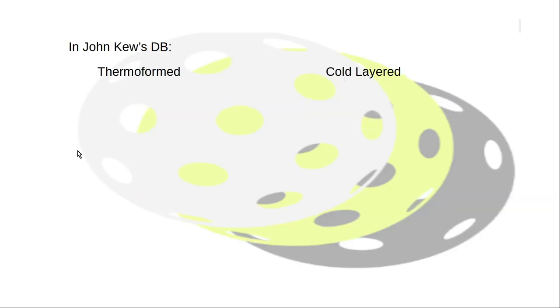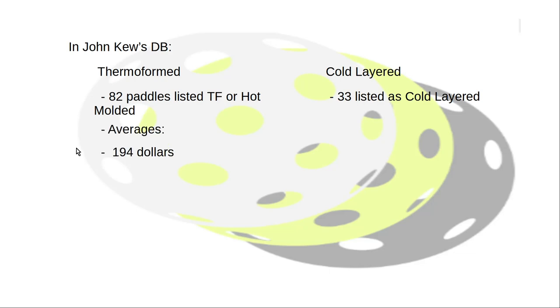In the database we're looking at the differences we have. John's got 82 paddles thermoformed or hot molded, but cold only has 33. Some of the averages include price, so thermoformed is more expensive by quite a bit. That's an alarming difference right there to be honest.